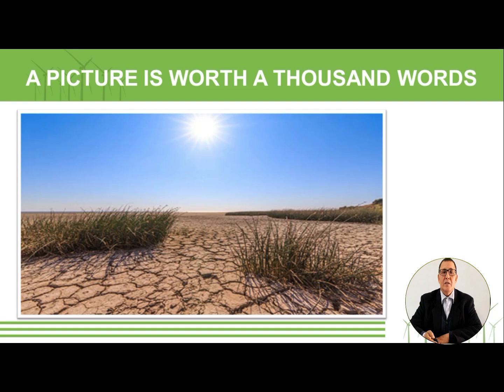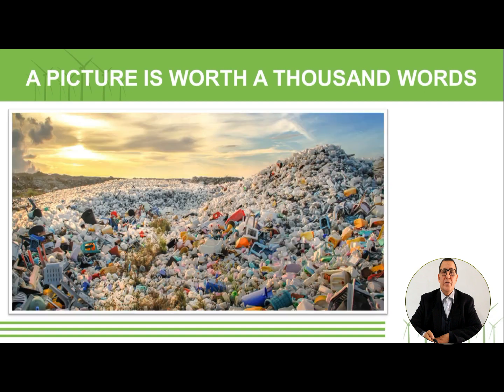Now look at the second picture — what can you see? No rain. What do you call this phenomenon? Good — droughts. So a period of a lack of rain is called droughts.